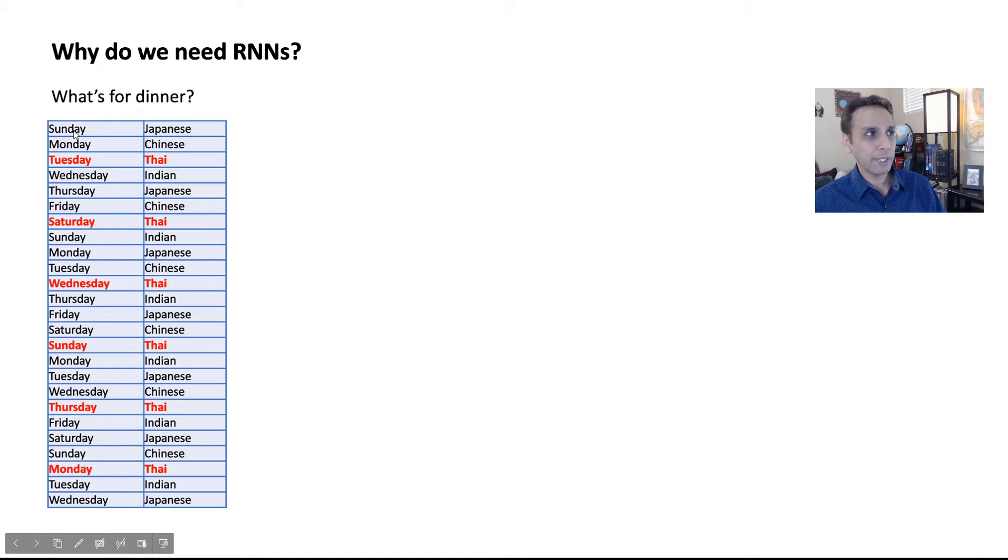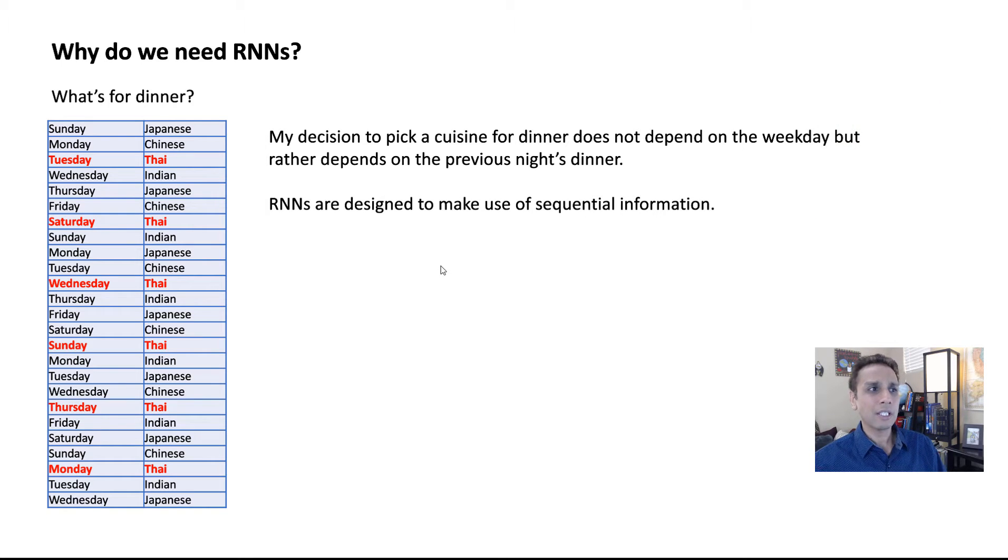So I go through these. There is no pattern here with respect to the date. It's not like on Sundays I'm eating Japanese, because if you look at Thai, I eat Thai on Tuesdays, on Saturdays, on Wednesdays, on Sundays, Thursdays, Monday. So there is no correlation between these two columns. There is correlation between this column itself, between different data points. This is what we call autocorrelation. I talked about this in the first video of this time series tutorial. This is why we need RNNs. We are modeling Y to predict Y. Because what I'm going to eat tonight depends on what I ate yesterday and the day before, not on what day it is.